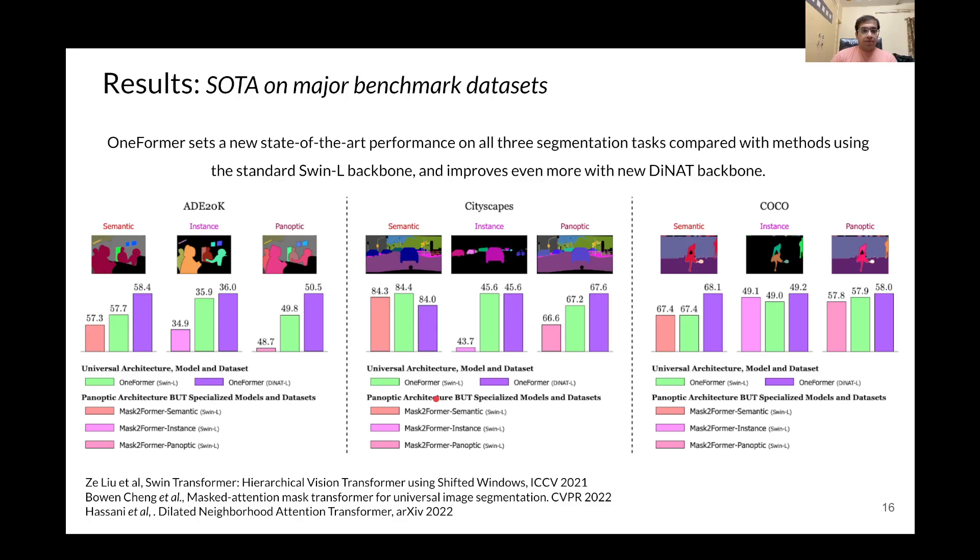Now, we move on to the results. Our OneFormer is able to achieve state-of-the-art performance on all three image segmentation tasks compared with methods using the standard Swin-L backbone. It is able to improve even further using the newly proposed dilated neighborhood attention backbone. As you can see in the figure, our OneFormer shows the best performance on each task on each of the datasets.